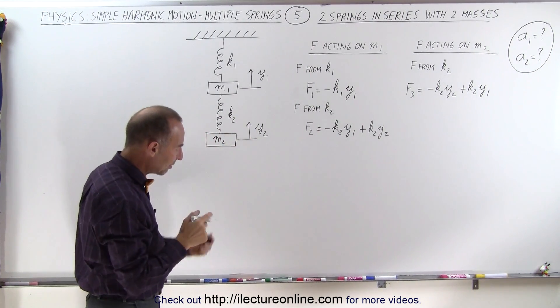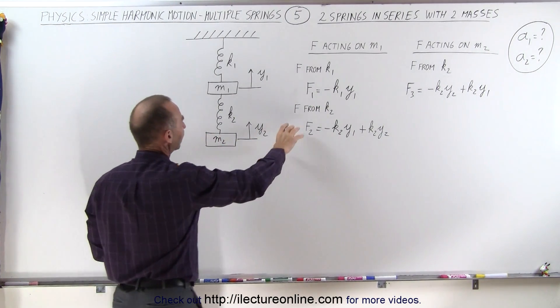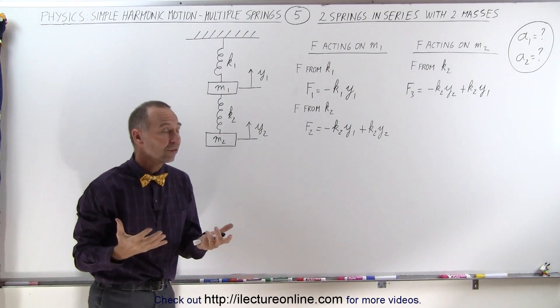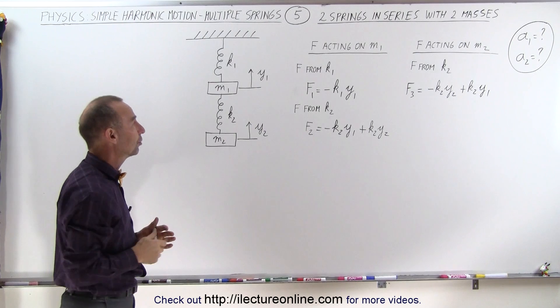And so I think now we have the three forces, two forces acting on m1 because of the two springs, and one force acting on m2 that now allows us to find the acceleration of both of the two masses.